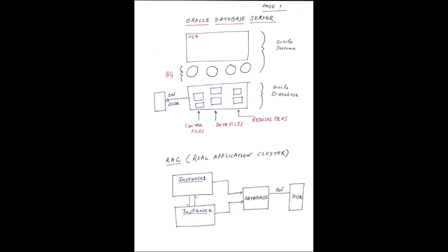Before we get into ASM, let us understand the basics. Oracle database has data files, control files, and redo log files. Data files store customer information as well as management information for managing the database. All operations are done in the instance, and then the information is returned to data files from time to time.